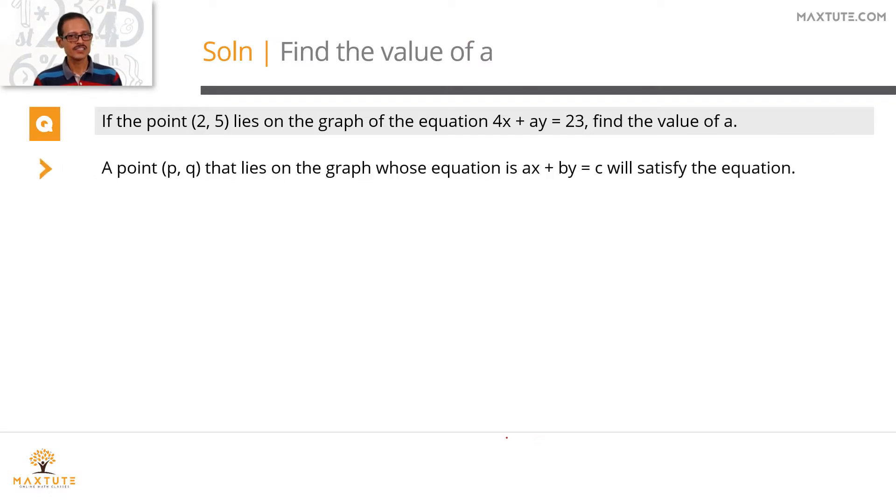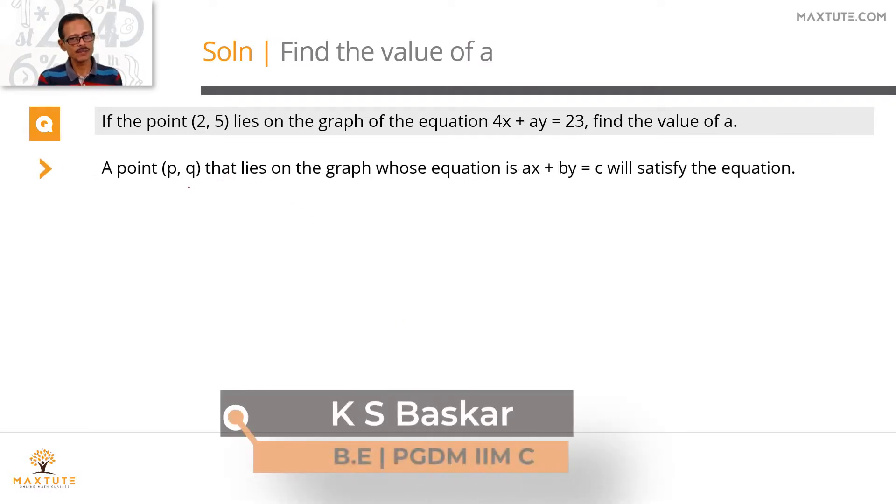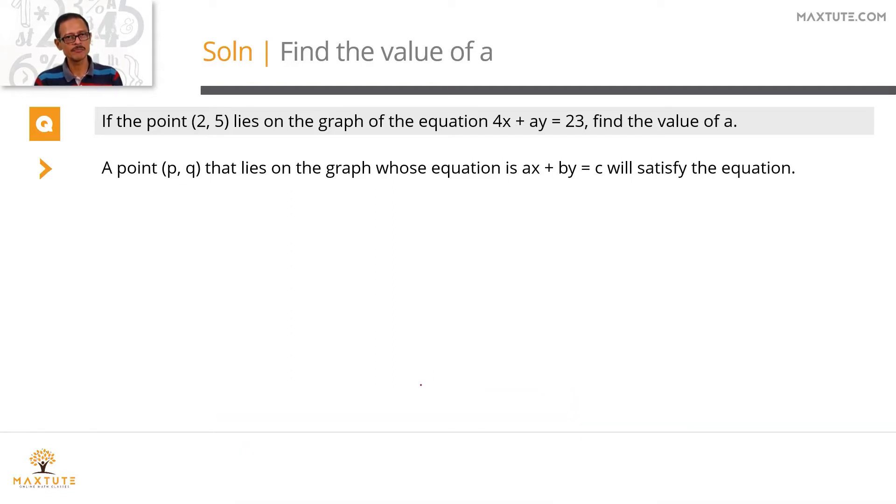The idea is this: if you have coordinates of a point (p, q) that lies on the graph of an equation of the form ax plus by equals c, then substituting x equals p and y equals q will satisfy that equation.